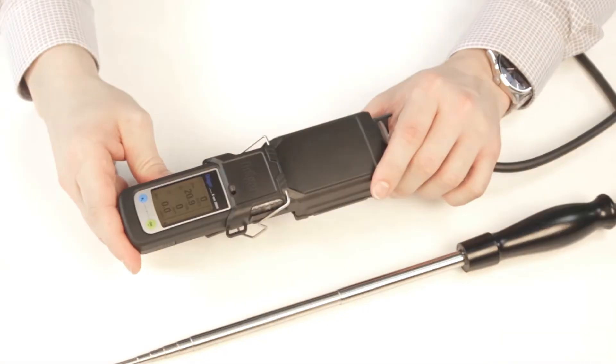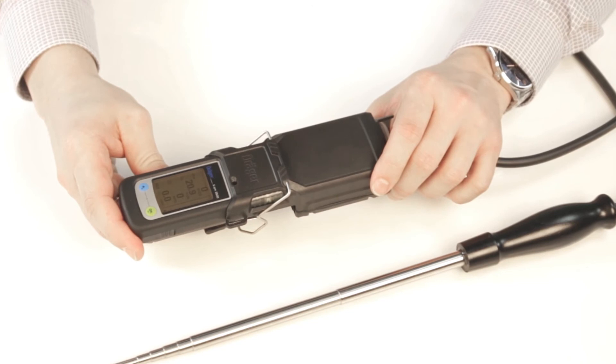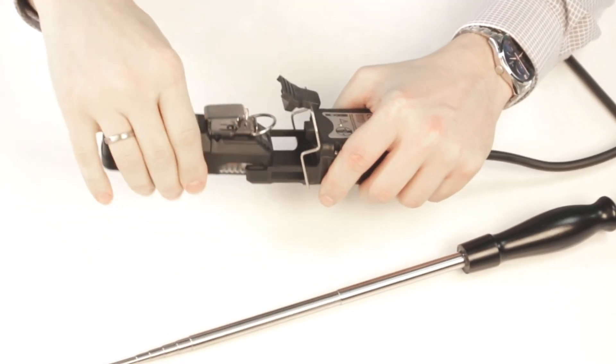The pump turns off automatically when it is removed from the XAM. Open the quick fastening clamp and remove the XAM from the pump.